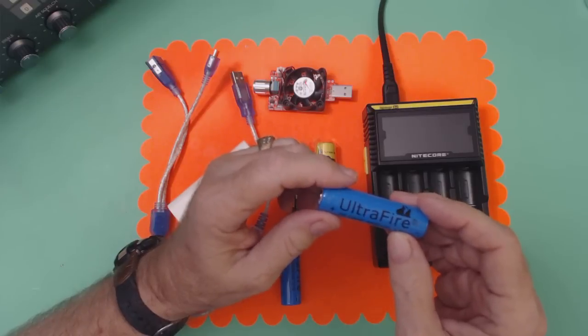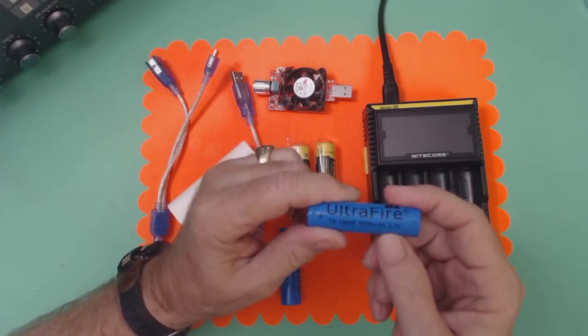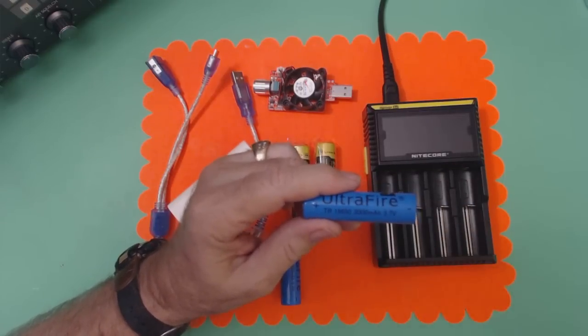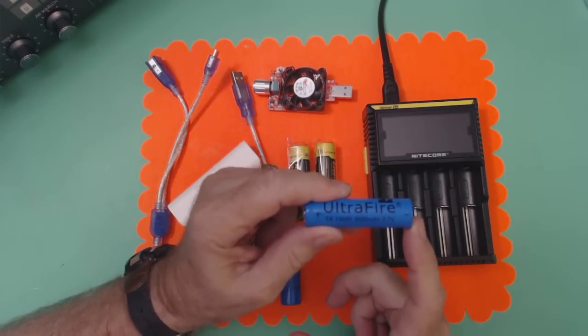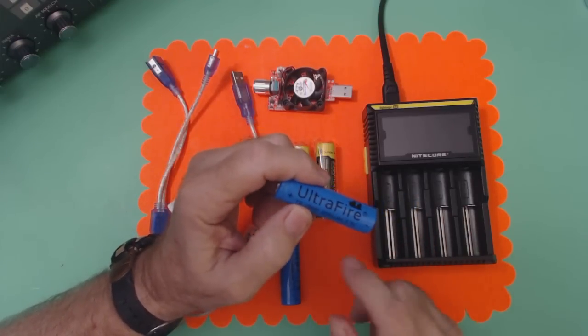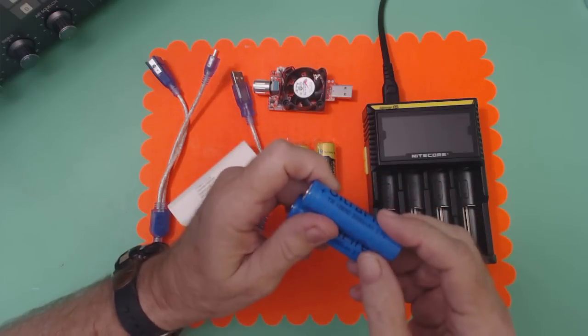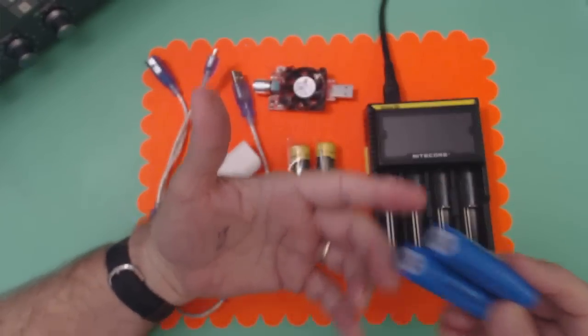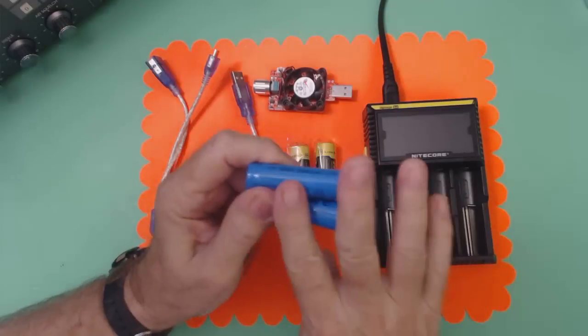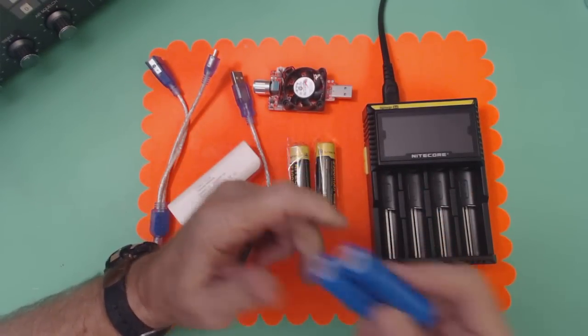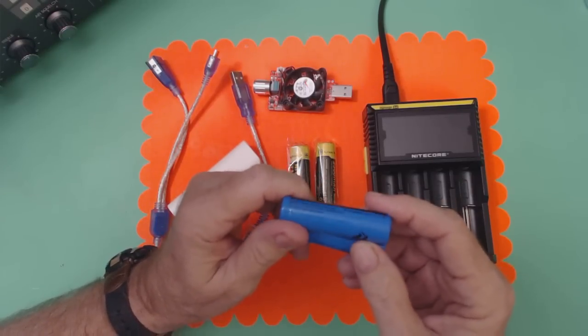Today we're going to check these Ultrafire batteries. This one is rated at 3,000 milliamps. I did some testing about a month ago. I got these about a month ago and they came with two batteries and a little charger for, let me see, I wrote it on my hand here, ten dollars. Okay, ten dollars - two batteries and a little charger for ten dollars.